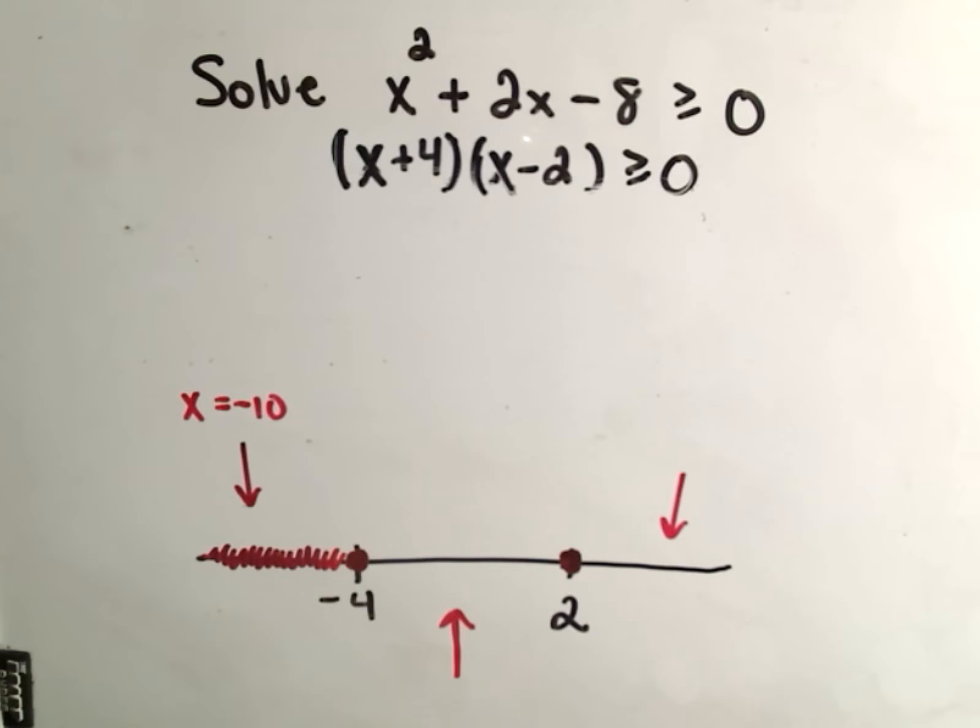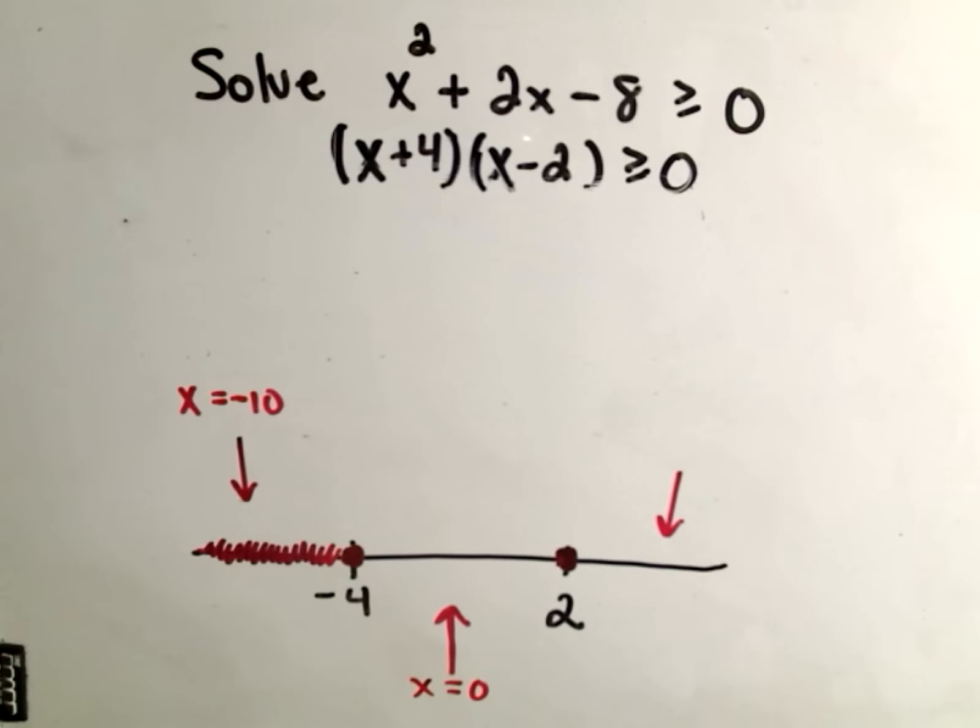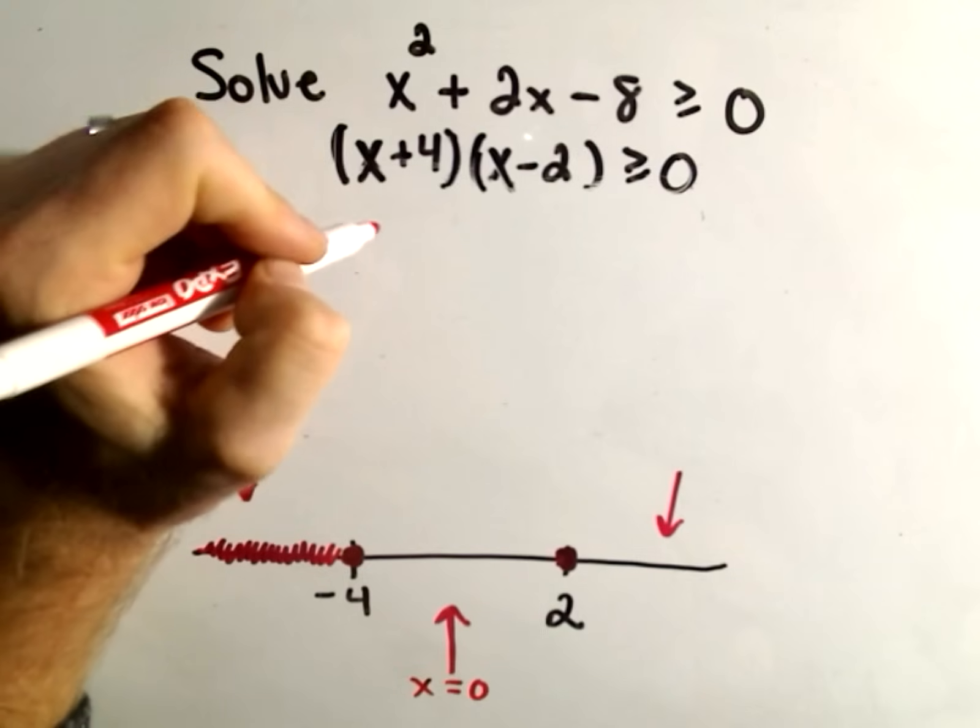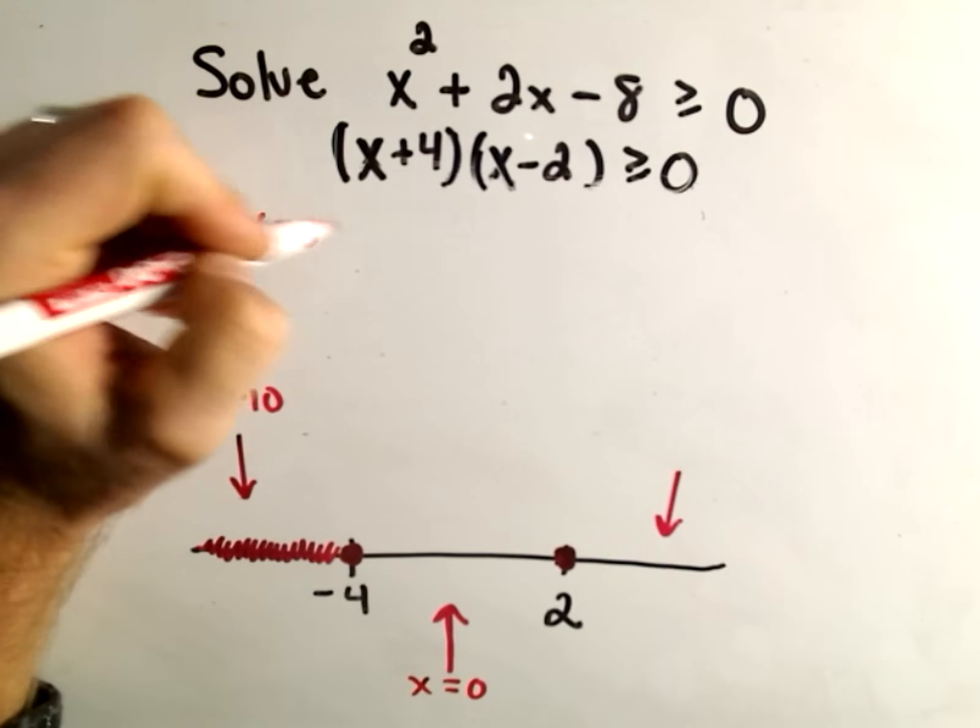But let's just keep checking. Let's just be, you know, do it the long way here, really check everything thoroughly. So I'm going to take a number between negative 4 and 2. Well, 0 is in that interval, and usually that makes the arithmetic easy. So if I check x equals 0,